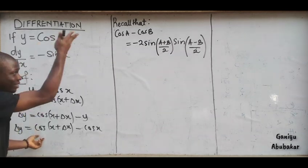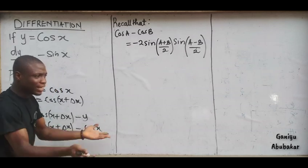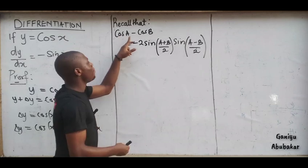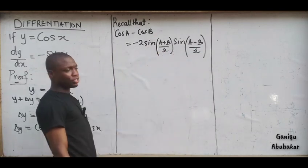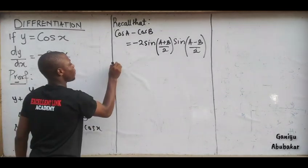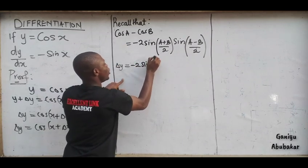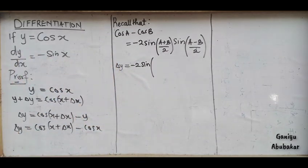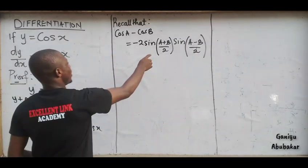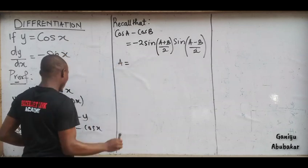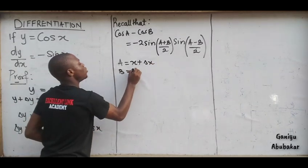So for our expression, we have cos of (x + Δx) minus cos of x. Applying the trig identity, we get negative 2 sin((a+b)/2) sin((a−b)/2). Let's identify a and b: a is equal to x plus Δx, and b is equal to x.